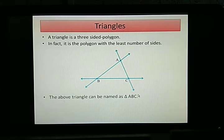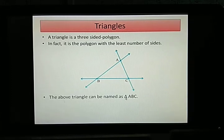So what is the name of this triangle? In the above triangle, it can be named as triangle ABC. And if you see properly, this symbol, this is the triangle symbol. And we don't write it as in words triangle ABC, but we use this symbol to denote that this figure is a triangle.